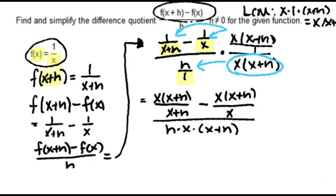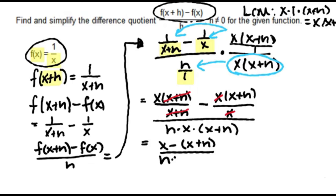This next step is where the clearing fractions method gets its name. We have common factors: x plus h cancels out and x cancels out. By multiplying by the least common multiple of the denominators, we're canceling out those denominators — clearing the fractions from the expression. What we have left is x minus, in parentheses, x plus h, over h times x times x plus h.